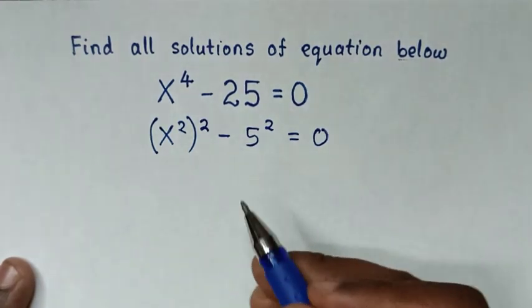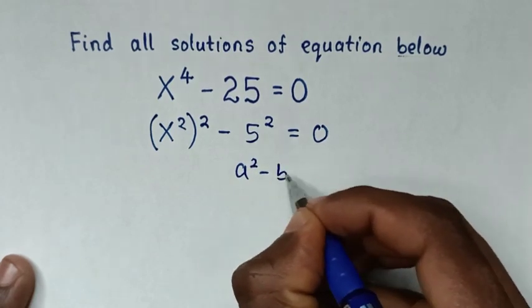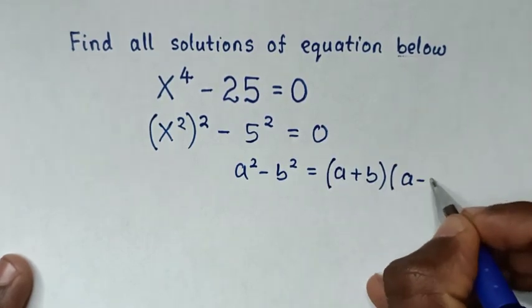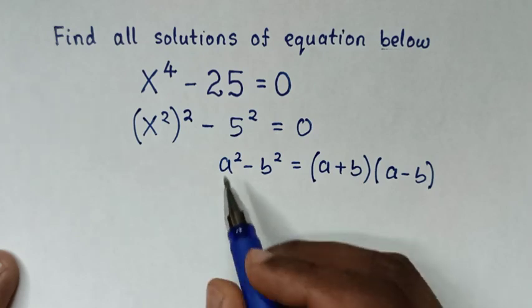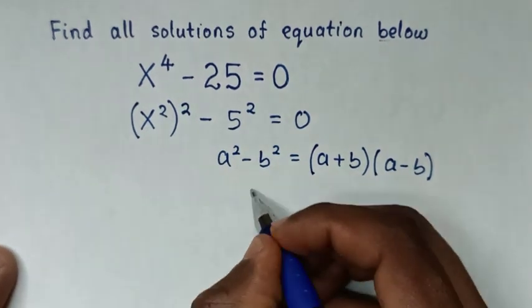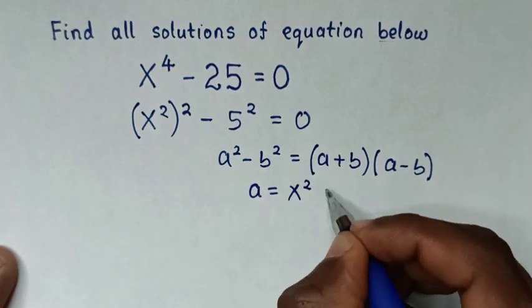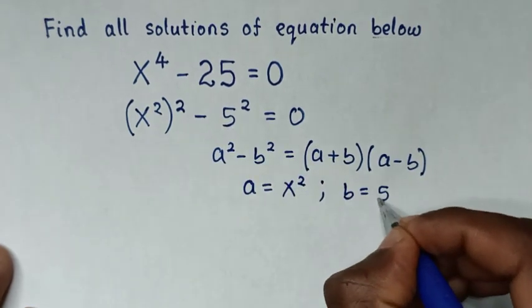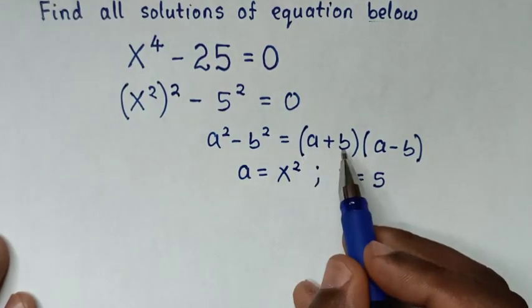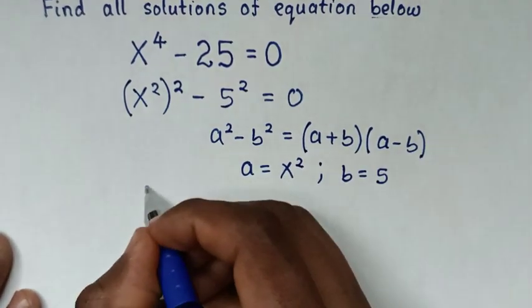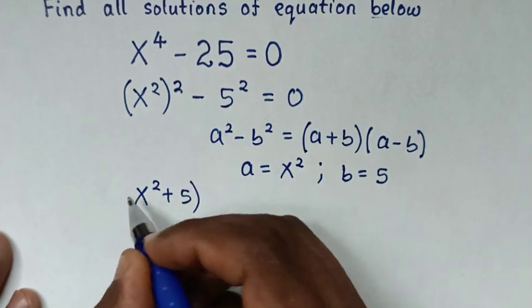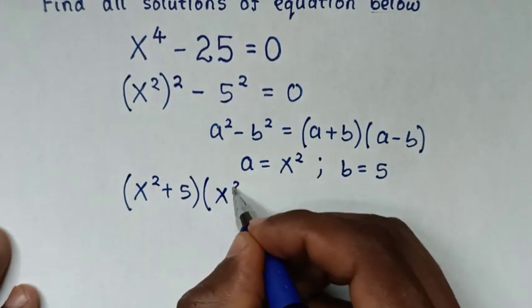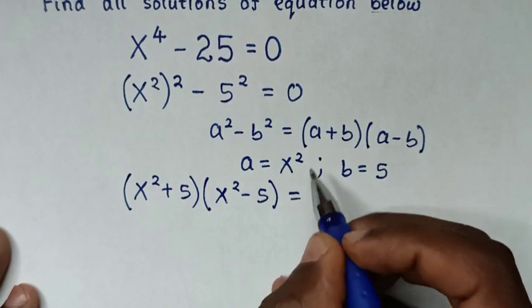Then from here we apply the difference of squares rule: a² - b² = (a + b)(a - b). Comparing a² with (x²)² gives a = x², and comparing b² with 5² gives b = 5. So it becomes (x² + 5)(x² - 5) = 0.